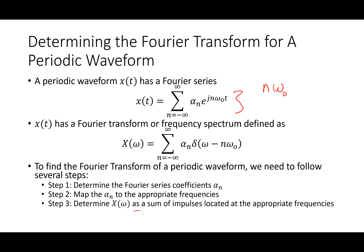We related that to something called a Fourier transform. X of t is a function of time; X of omega is a function of frequency. What is X of omega going to look like for a periodic waveform? Let's say I had cosine of 30t minus 30 degrees — what would X of omega look like for that?